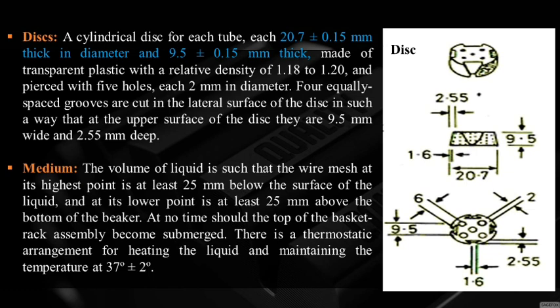At its lower point, the basket should be at least 25 mm above the bottom of the beaker. At no time should the top of the basket rack assembly become submerged. There is a thermostatic arrangement for heating the liquid and maintaining the temperature at 37 ± 2°C.